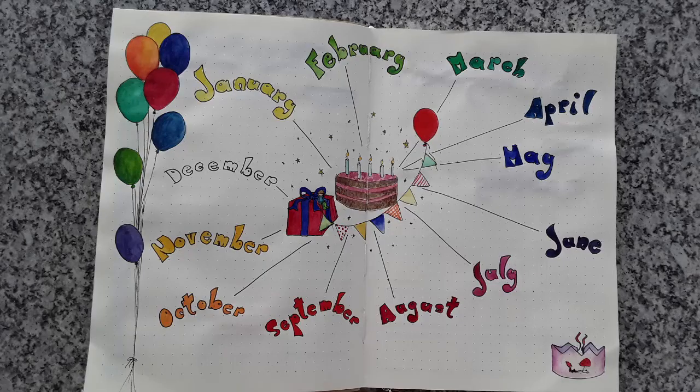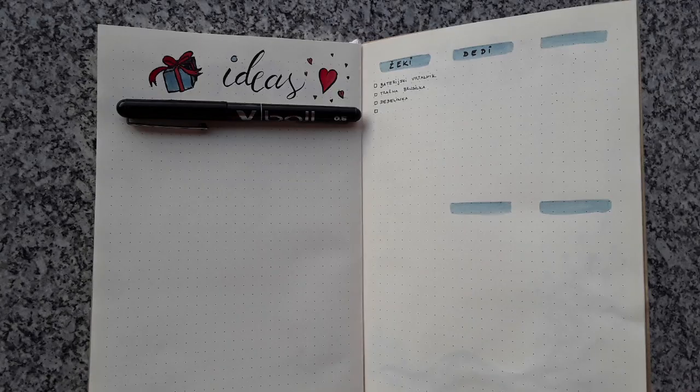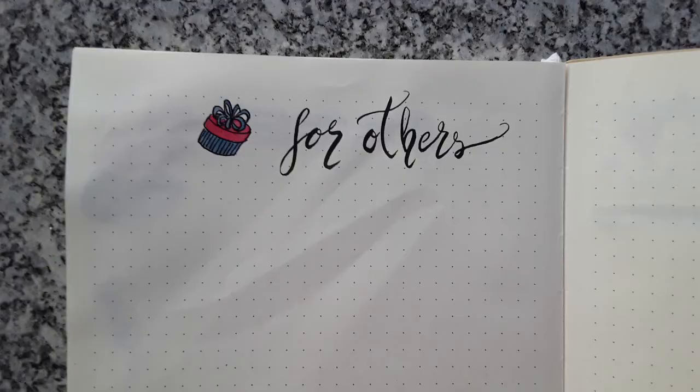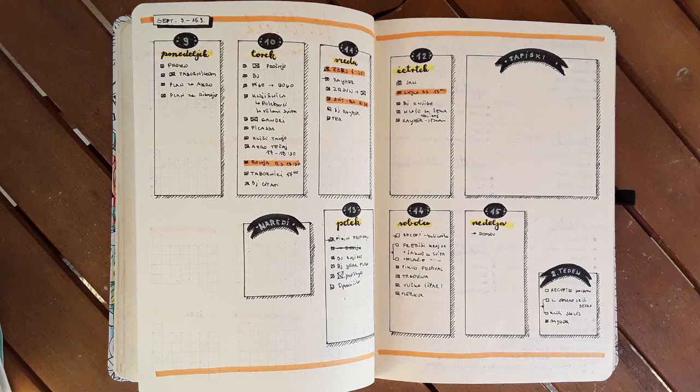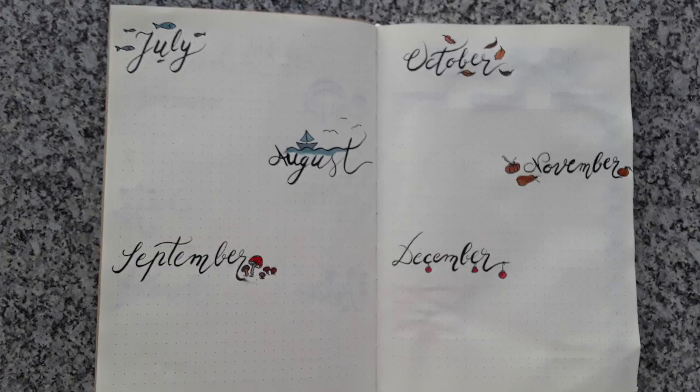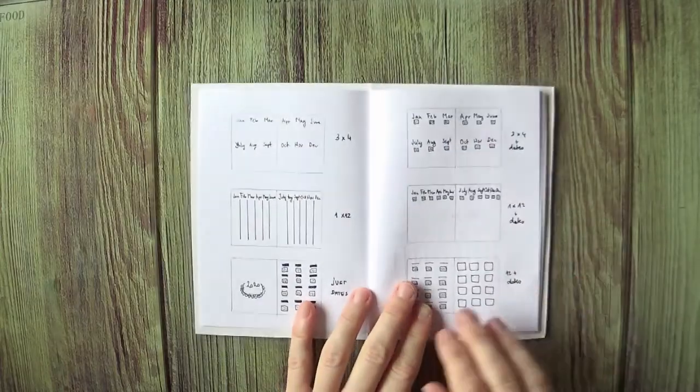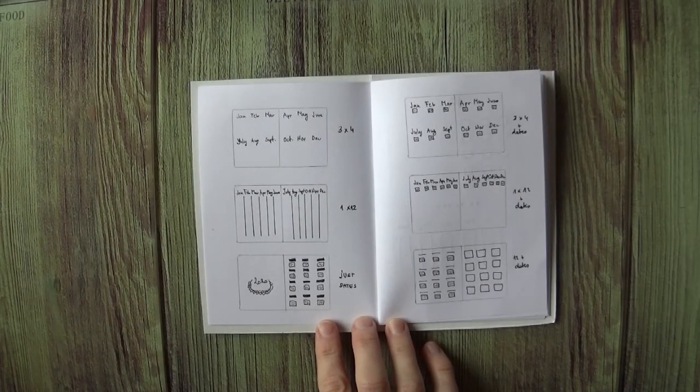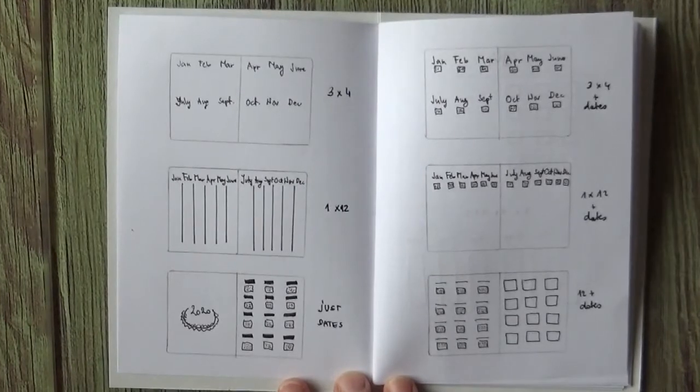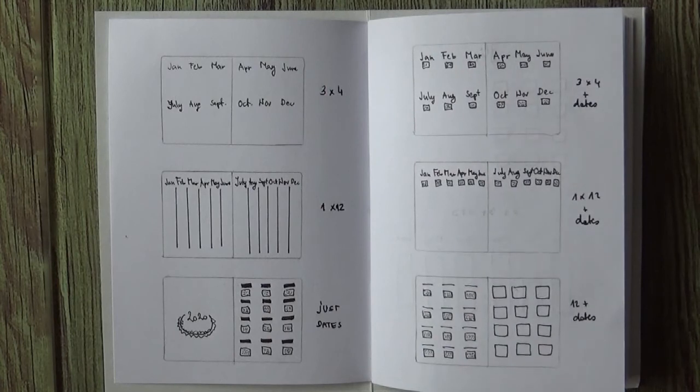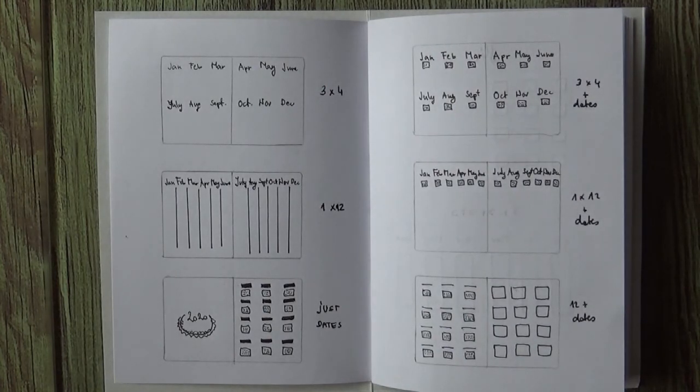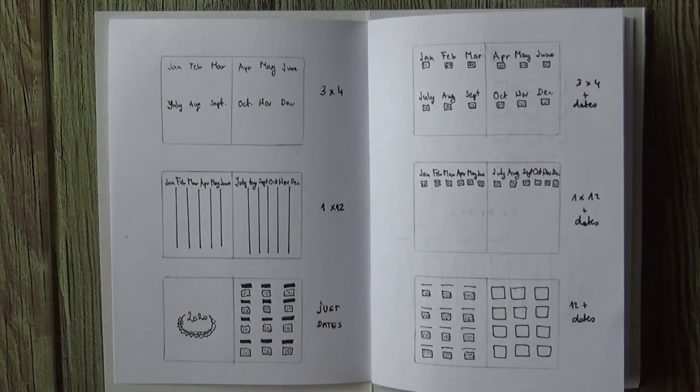Now let's see how we can set it up. One part of the bullet journal are the lists and the other part are the plans, future plans. And in this video we'll focus on yearly plans. Basically that's a year at a glance. I've drawn some setups here and I'll put this picture on my blog so you can take a closer look. But basically what you want to do is put all of the months or at least half of the year onto a two-page spread.